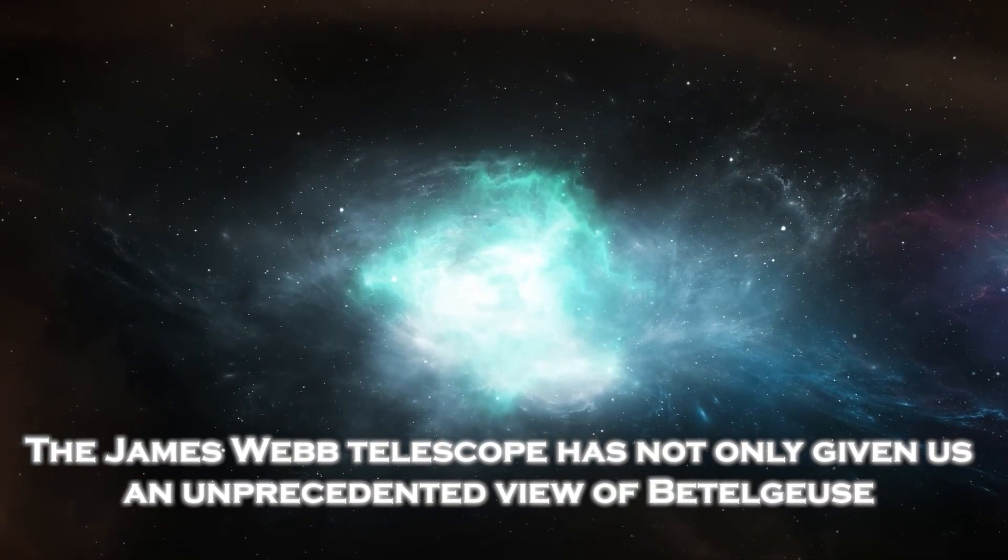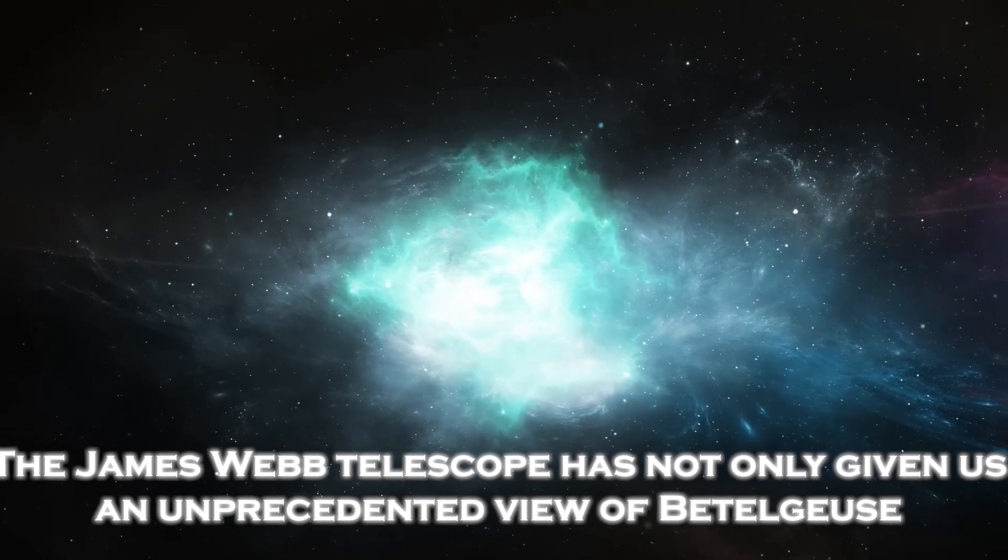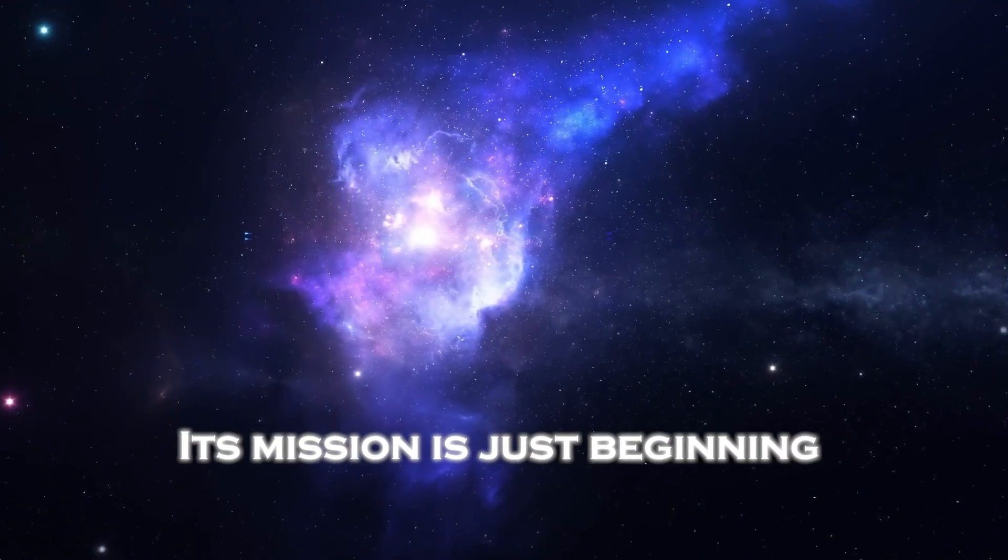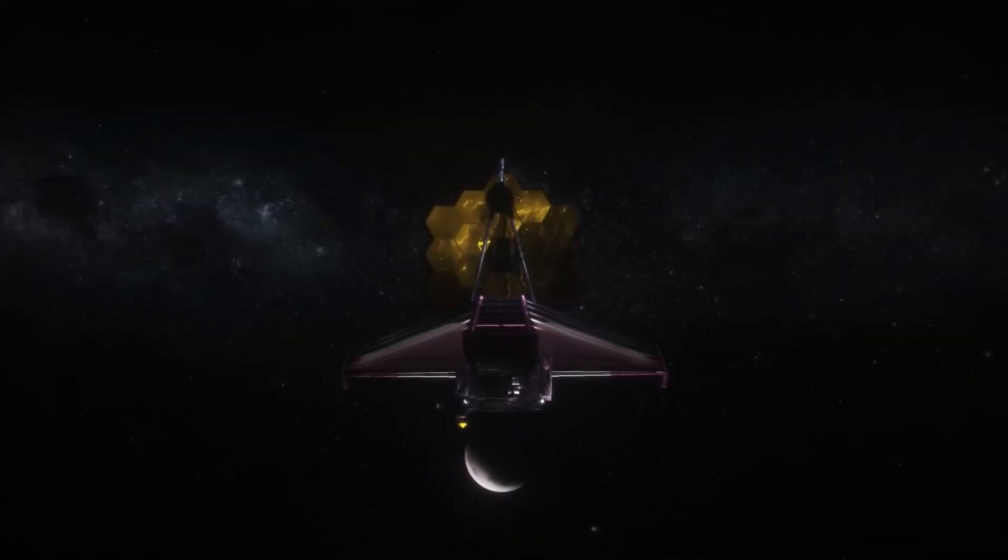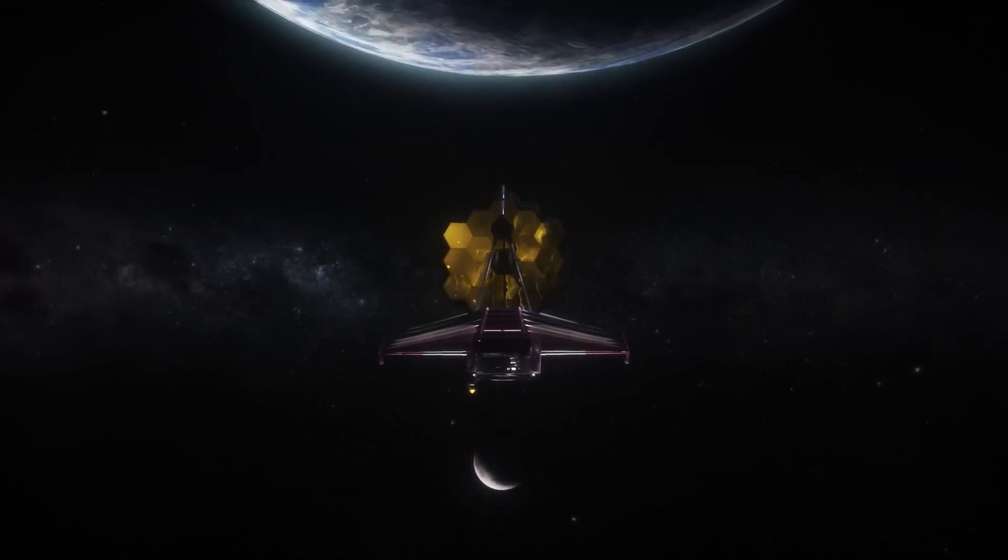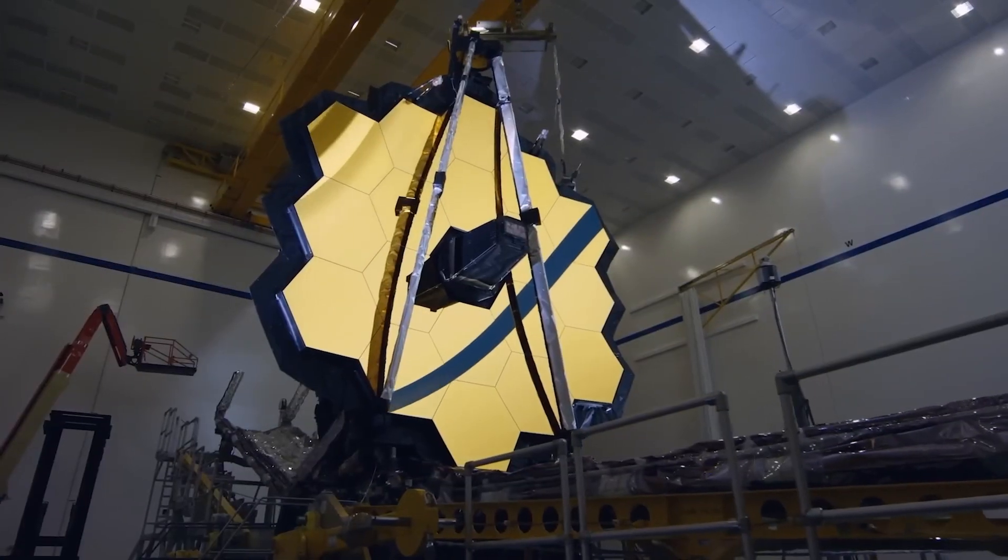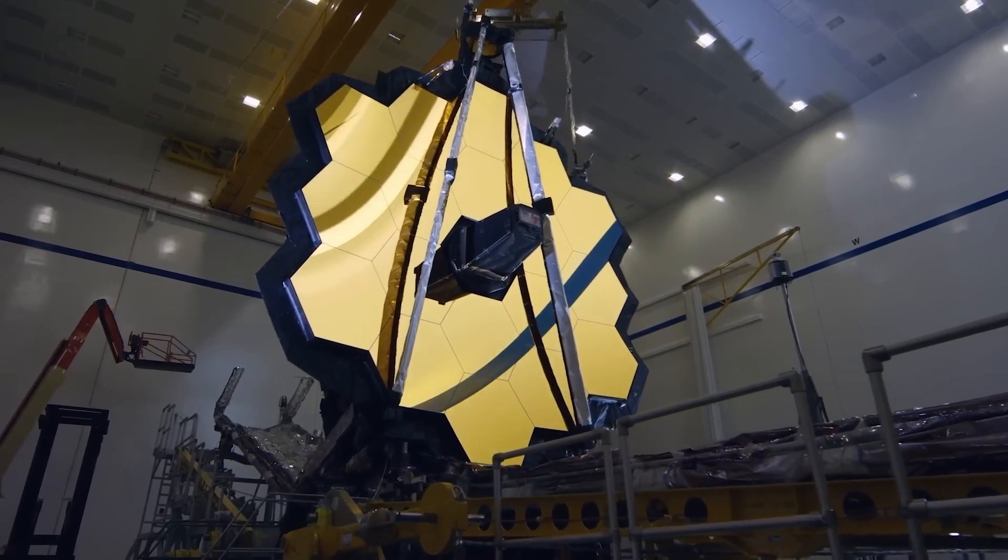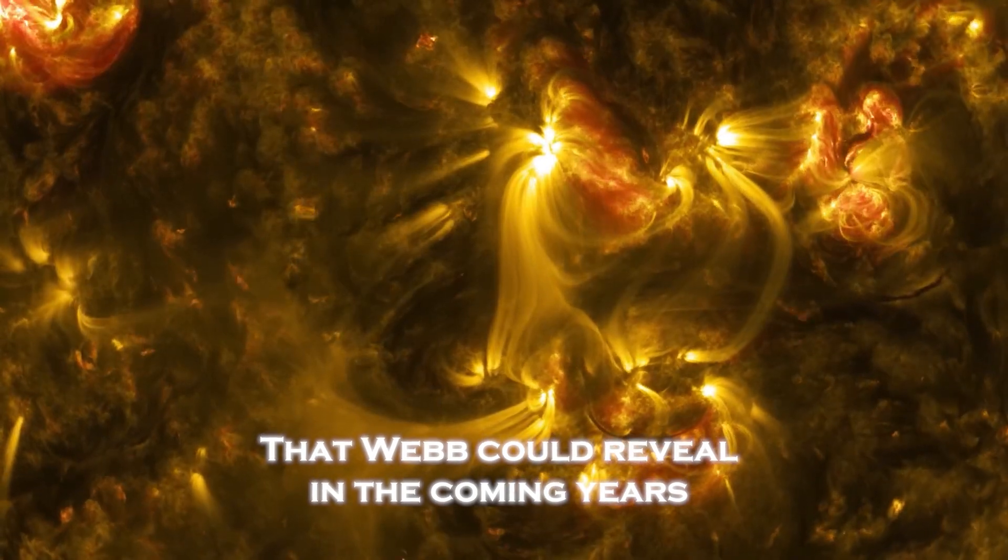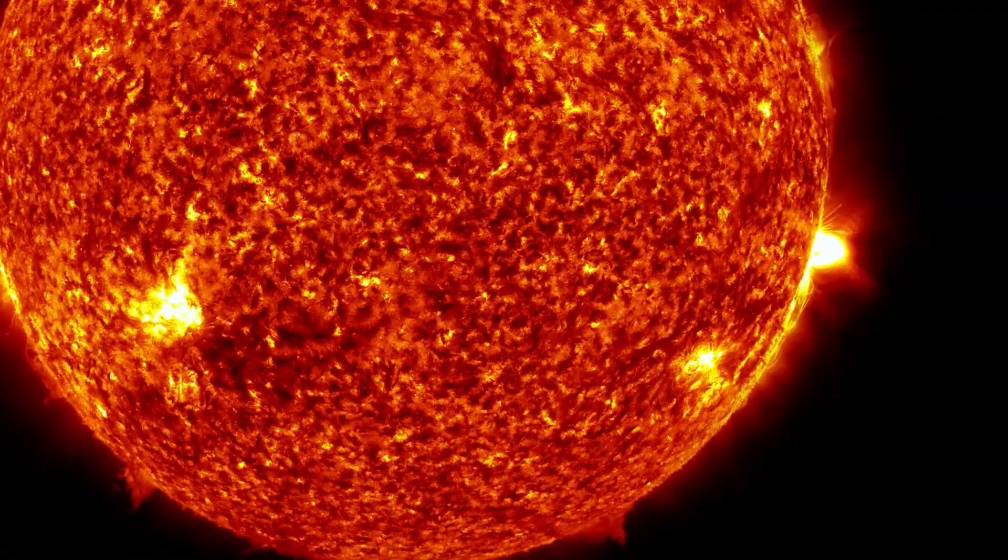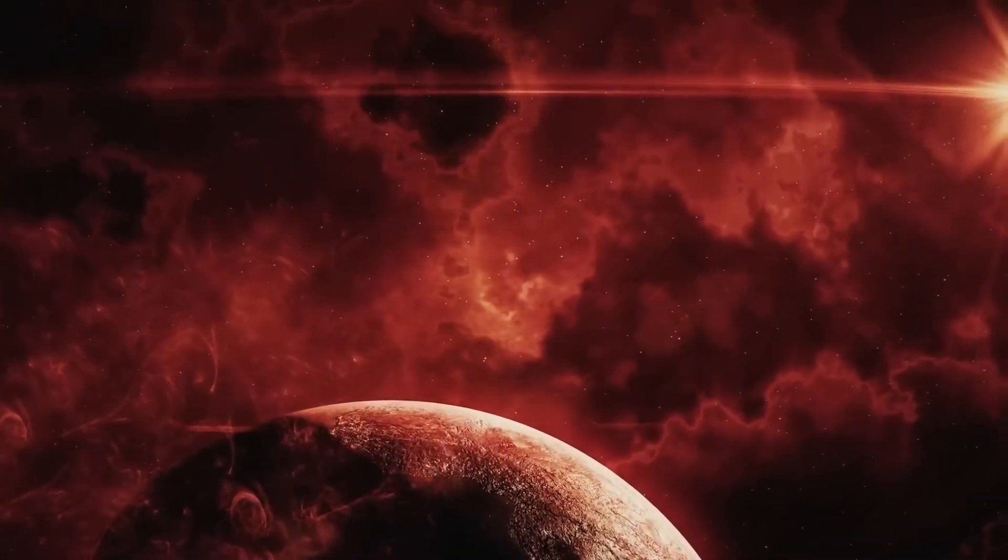The James Webb telescope has not only given us an unprecedented view of Betelgeuse, its mission is just beginning. From distant galaxies to potentially habitable planets, the James Webb is designed to look farther than we have ever reached. What it's captured so far is just the beginning of a revolution in astronomy. The image of Betelgeuse is one of many wonders that Webb could reveal in the coming years. From star formation to the search for life, each observation represents an opportunity to unlock the deepest secrets of the universe.